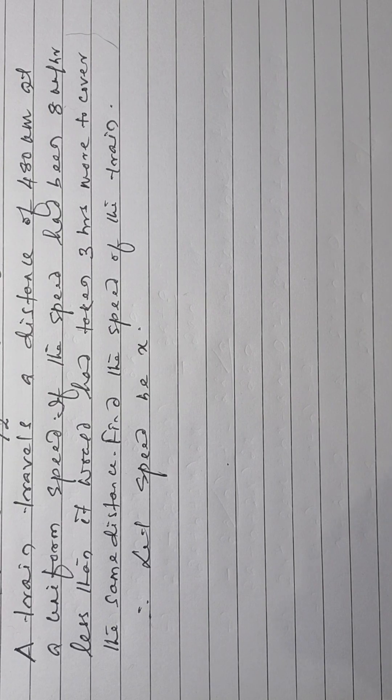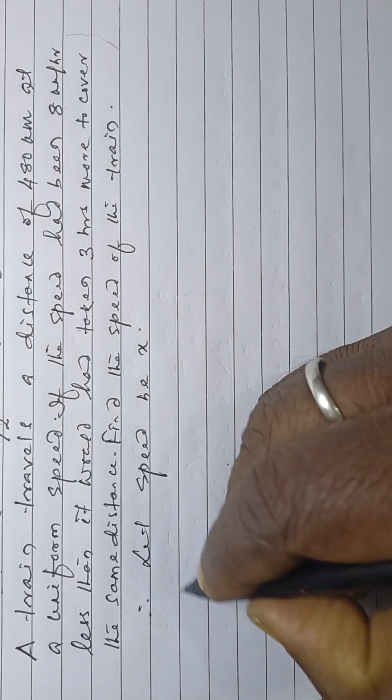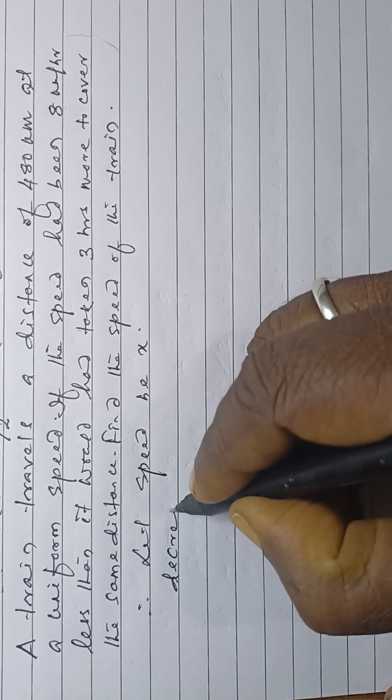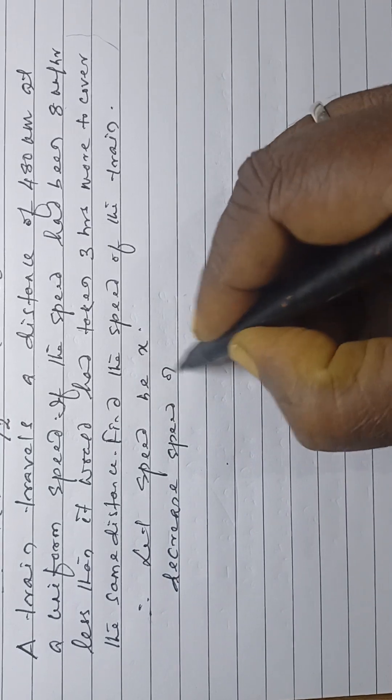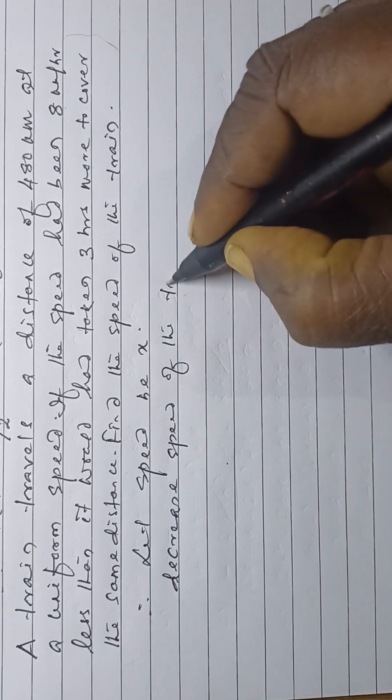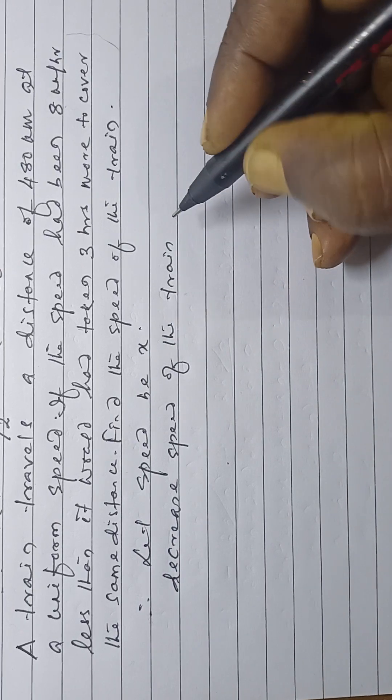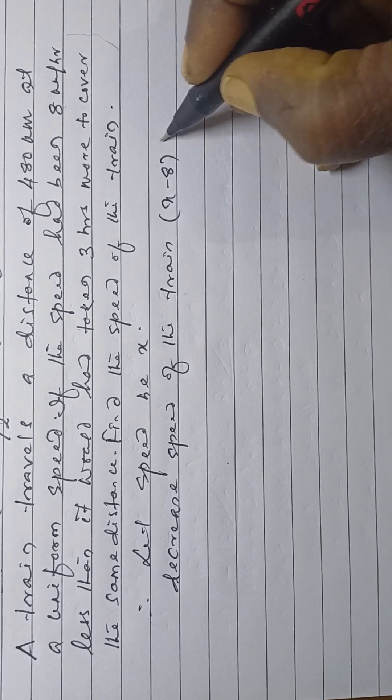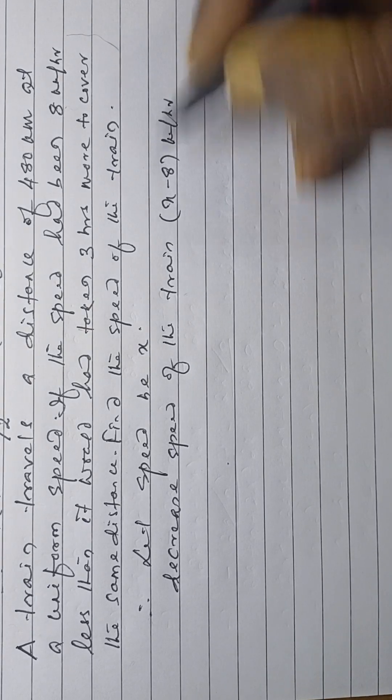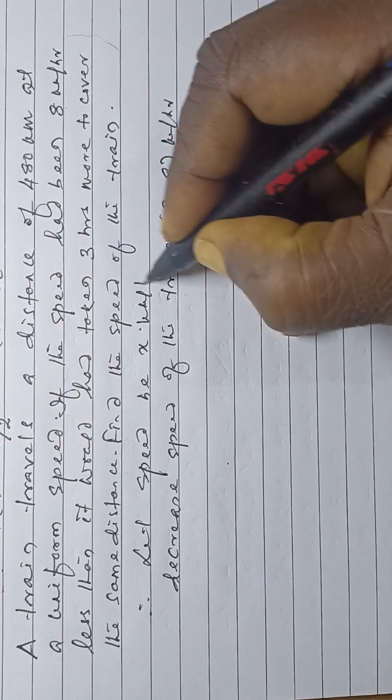Decreased speed of the train, that is x minus 8 km per hour. Here also, km per hour.